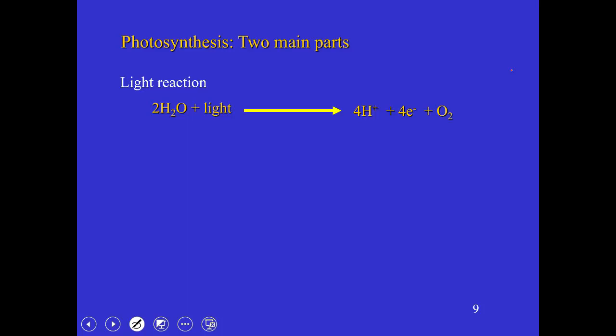Photosynthesis consists of two parts. The light reaction, obviously because it depends on light, involves the splitting of water and producing oxygen. That water yields two electrons that go on to the dark reaction. The dark reaction is not so named because it's inhibited by light, but simply because it does not involve light directly. That's the reaction that fixes CO2 and produces organic material. In this course I'll often use CH2O as shorthand for organic material—it's not representing a particular compound, just a general shorthand for nondescript organic material.